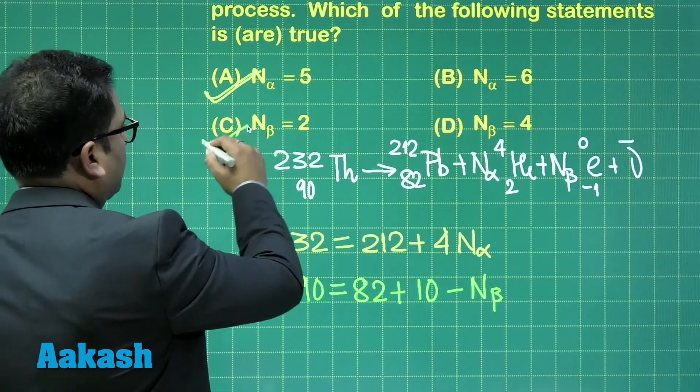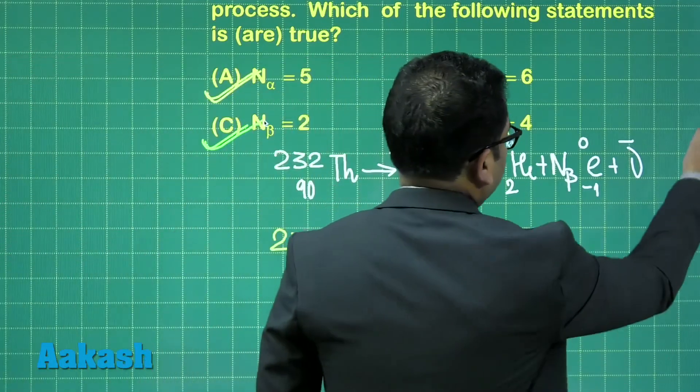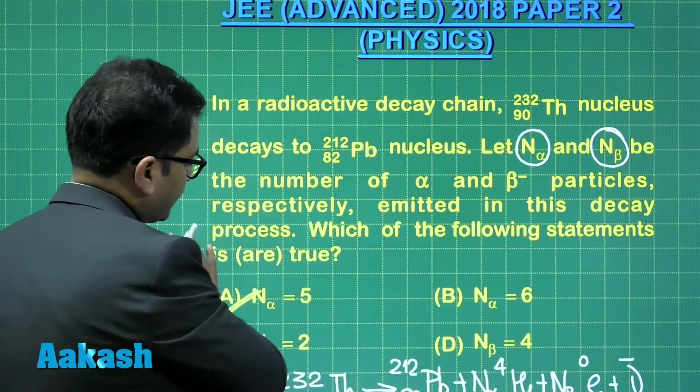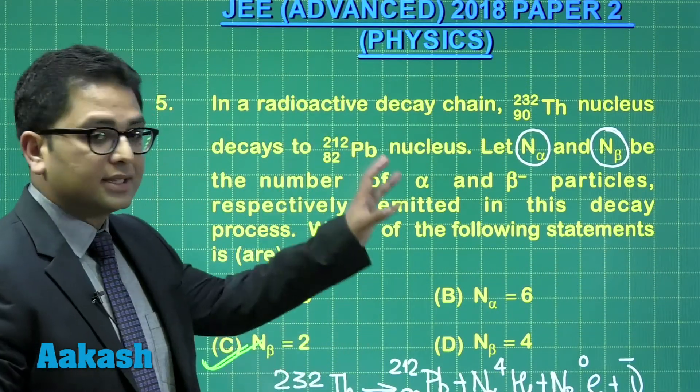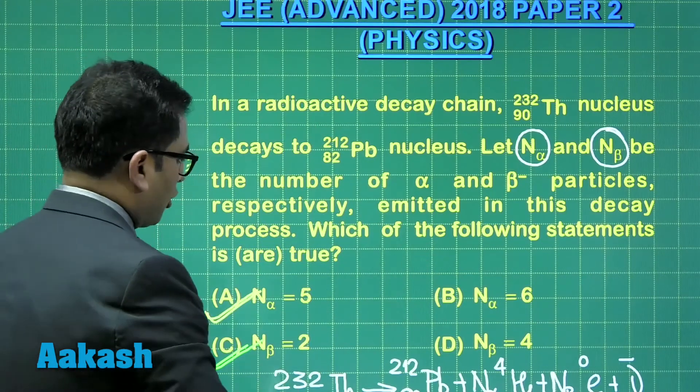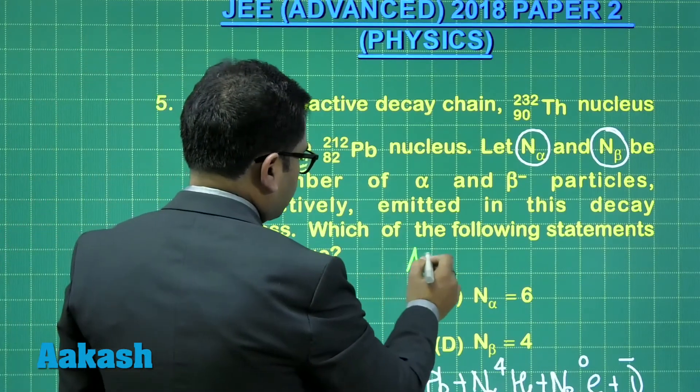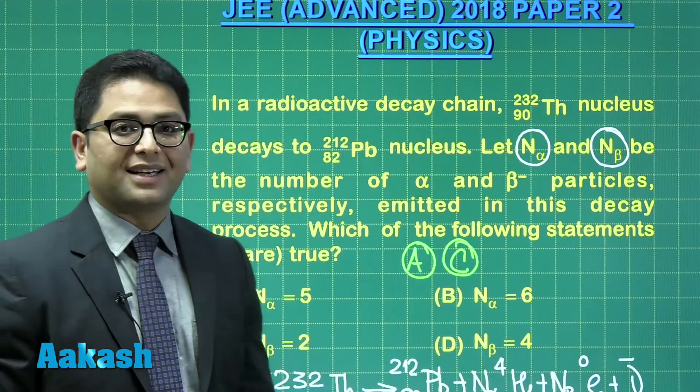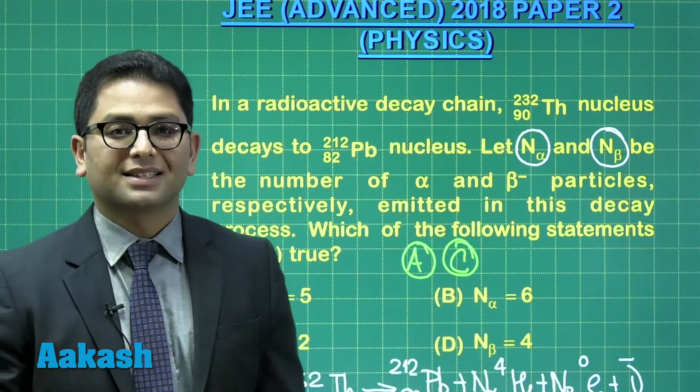So the number of alpha particles emitted is 5, the number of beta particles emitted is 2. So question number 5 for this particular decay, the option correct would be option A and option C. That was straightforward indeed. Now let's move to question number 6.